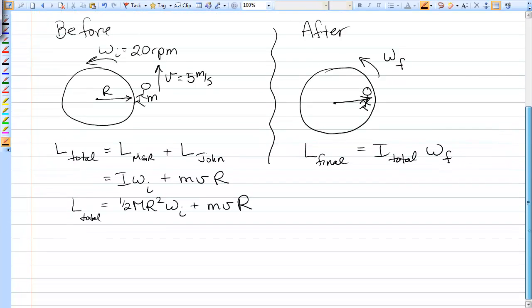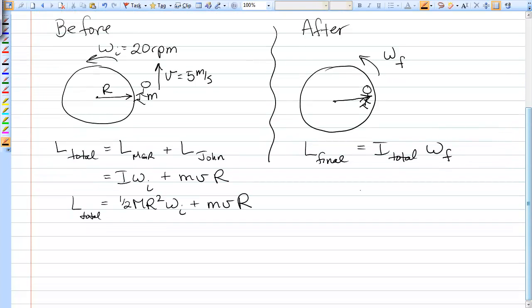And that must be exactly equal to the final total angular momentum. I'll put this up here. I total now is the moment of inertia of the merry-go-round, half MR squared, plus the moment of inertia of John as just a blob on the edge, which would just be MR squared, times omega F.